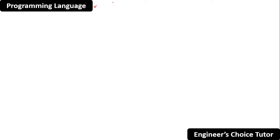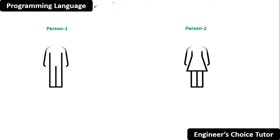Suppose there are two persons and they want to communicate with each other. Person one is Naveen and person two is Darshini. They want to communicate with each other, and in order to communicate they should know a common language.